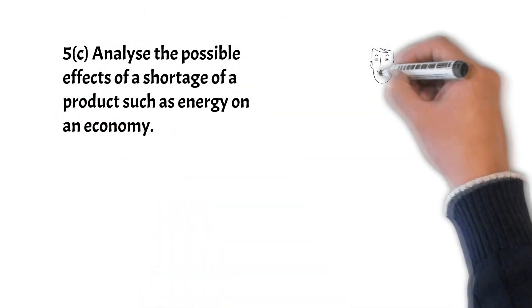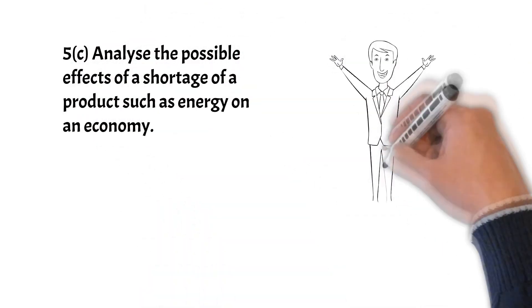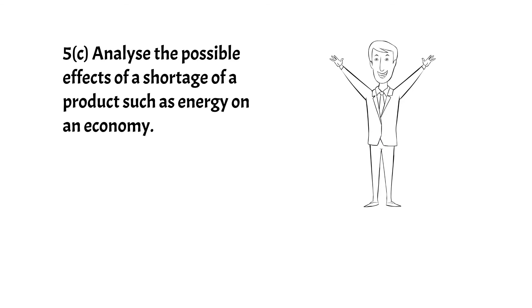Now question 5, part c: analyze the possible effects of a shortage of a product such as energy on an economy. Low supply could lead to high prices and increase costs of production for firms. Cost push inflation means that firms might try to cut costs by firing workers which will increase unemployment. Increase price of goods and services decrease affordability, decreasing demand for goods and services, decreasing standards of living. More imports may be required to address shortages, which may mean less production, leading to a lower growth rate.